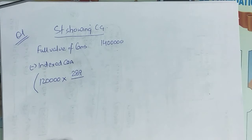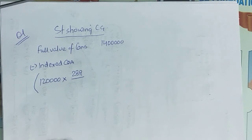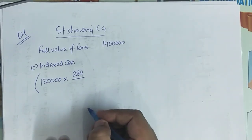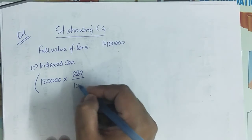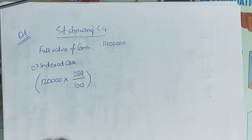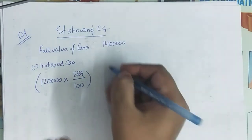So, on the last page — the cost inflation index table — 97-98 CII is not available because the CII series starts from 2001-02. So in this case, since we don't have 97-98, we use 2001-02 as the base, which is 100. So: Rs 1,20,000 into 289 divided by 100 = Rs 3,46,800.